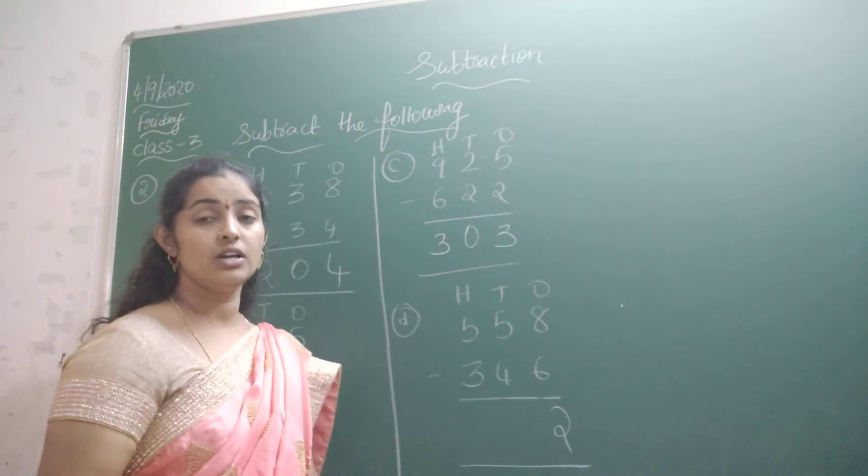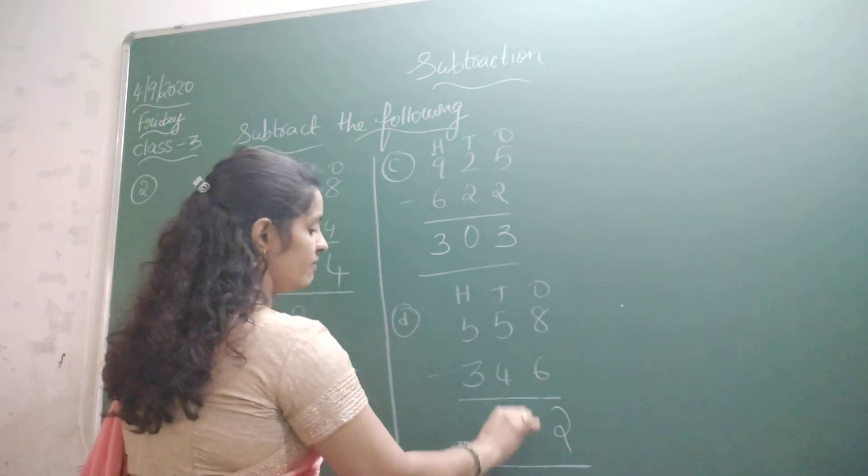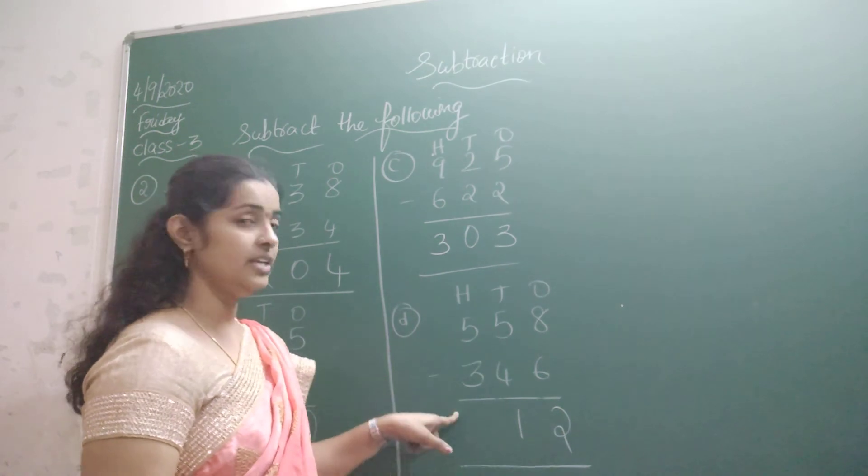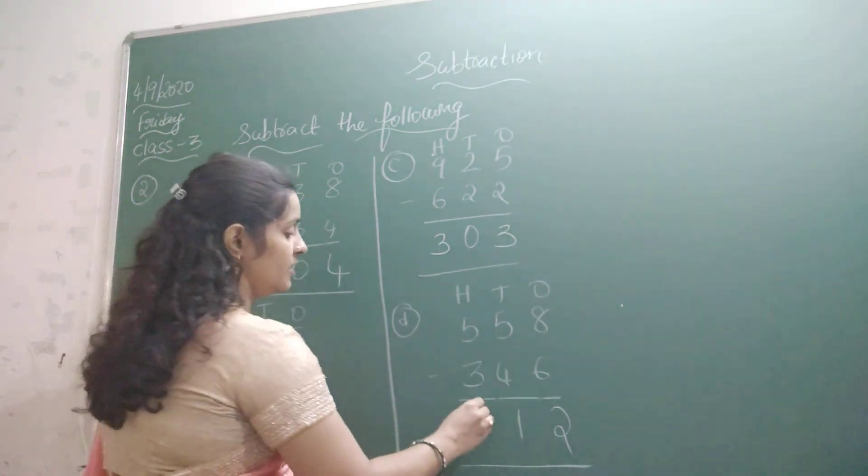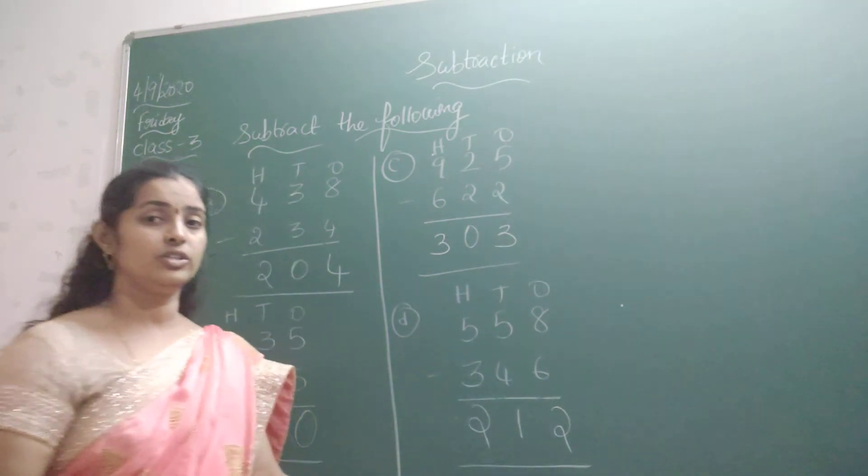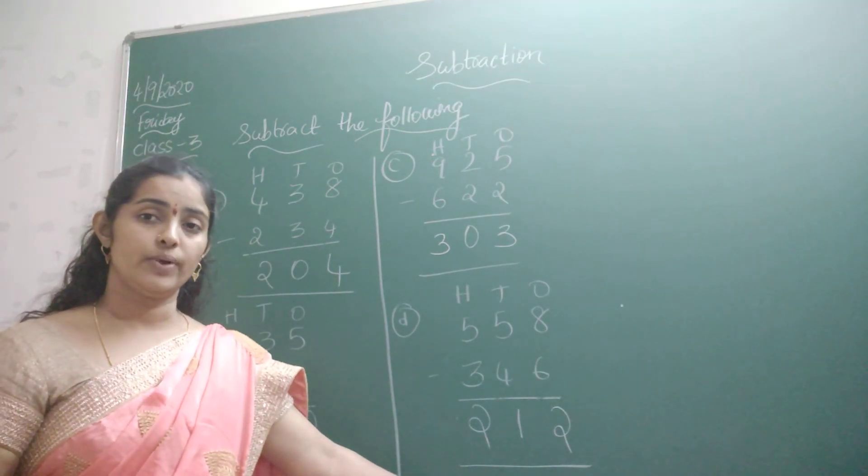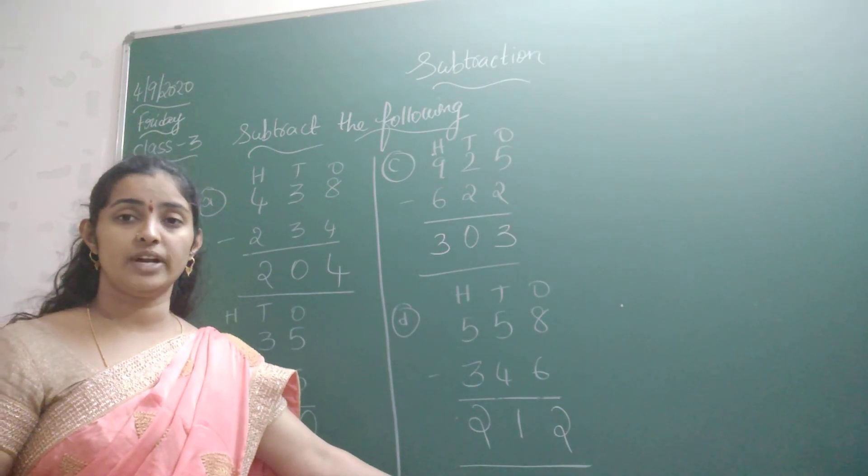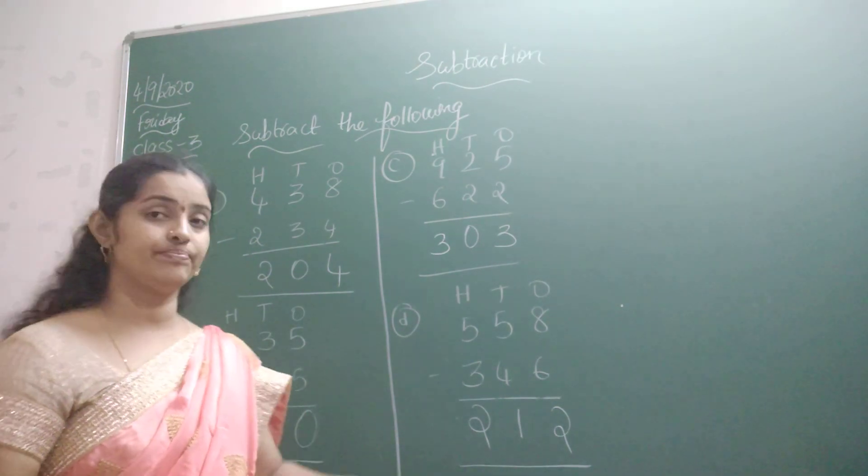Then 5 minus 4 is how much here? 5 minus 4 is 1. Then 5 minus 3 is how much? 5 minus 3 is 2. So that is 212. What is the required answer you got here? 212 is the required answer for the given problem. Thank you.